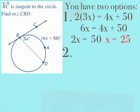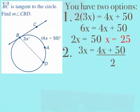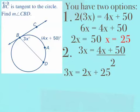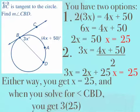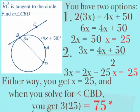My second option: leave my angle measure 3x alone, but take half of the arc length 4x plus 50. That gives 3x equals (4x plus 50) divided by 2, which simplifies to 3x equals 2x plus 25. Subtract 2x from both sides to get x equals 25. Now we have solved for x, but we have not answered the question. We got x equals 25, but now I want to solve for angle CBD: plug in 25 for x, so 3 times 25, giving a final answer of 75 degrees for angle CBD.